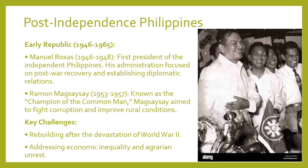After independence, the Philippines entered the early republic period from 1946 to 1965. Manuel Roxas was our first president, and his focus was on post-war recovery and building diplomatic relations. Ramon Magsaysay, who served from 1953 to 1957, was known as the champion of the common man, aiming to fight corruption and improve the lives of those in rural areas. This was a challenging time as the country had to rebuild from World War II, and economic inequality remained a significant issue with ongoing agrarian unrest.